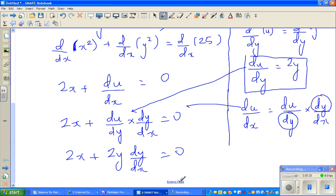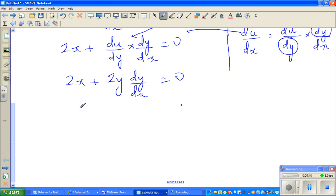So we are almost there. So we can say 2y times dy/dx equals minus 2x.